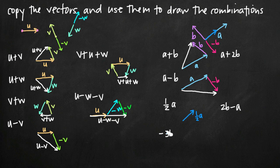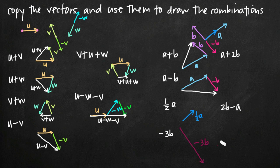Negative three b is the same as negative b but with a magnitude three times as large. So if negative b has a certain length, negative three b would be three times that length in the same opposite direction. We can visualize this as about three copies of negative b laid end to end.